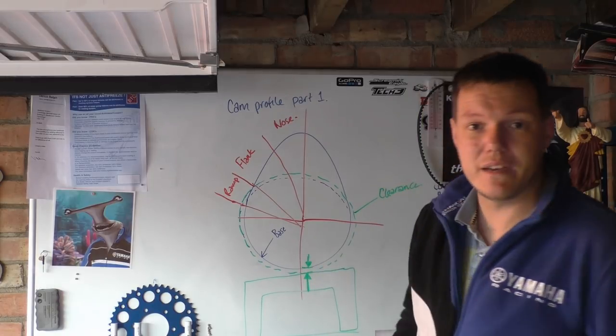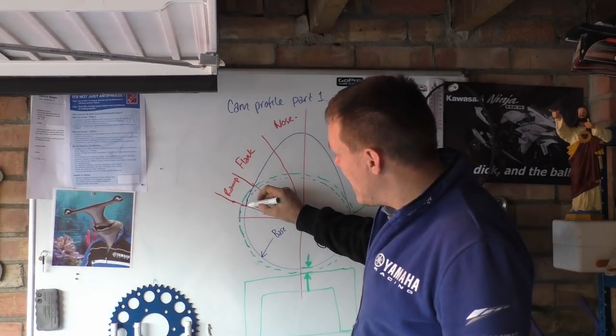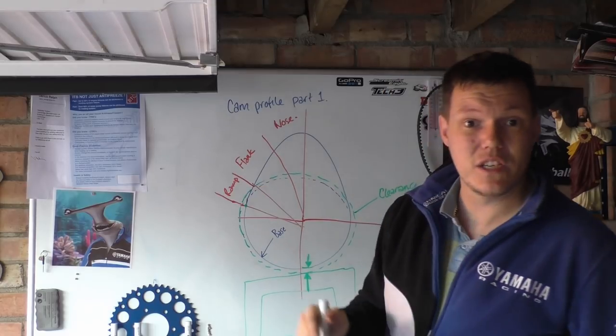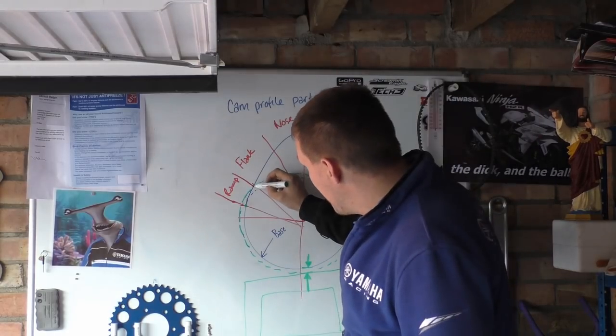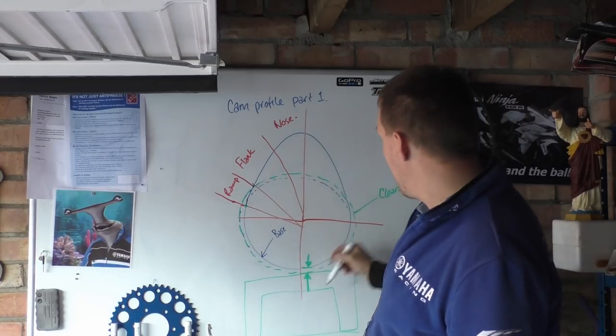So the ramp is where the cam starts there from its base circle and ramps up until it's actually coming into contact there - it's where this actual cam material crosses this line of this clearance circle, and we call that the ramp section.